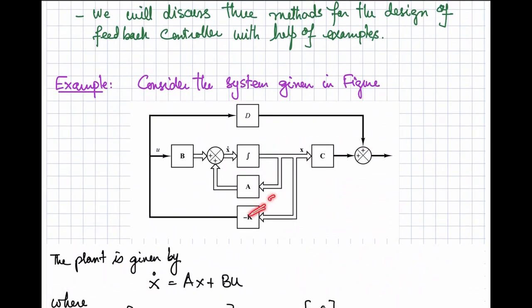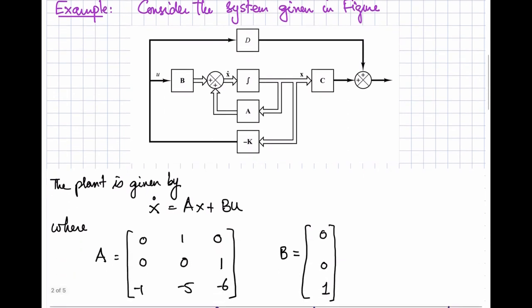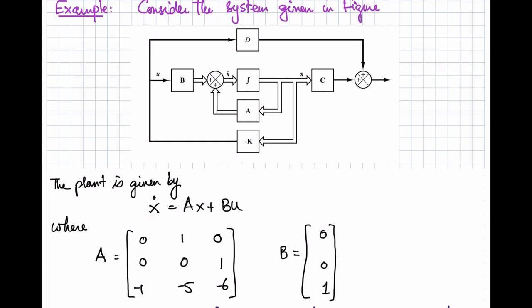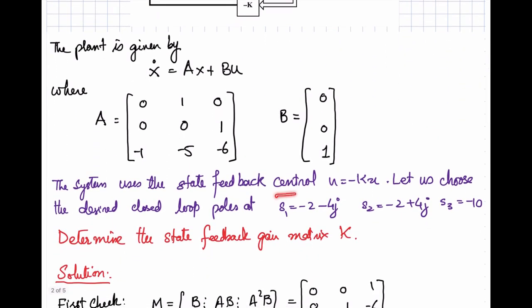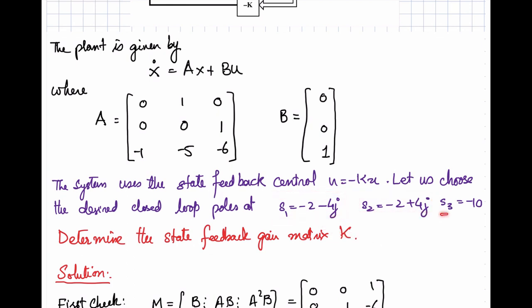We will discuss three methods for designing this feedback controller. Given a system defined by state equation with matrix A and matrix B, we want to find gain K to adjust closed-loop poles at desired locations. The desired closed-loop poles are: first pole at s = -2 - 4j, second pole at s = -2 + 4j (a conjugate complex pair), and the third pole at s = -10. We use state feedback control u = -Kx.